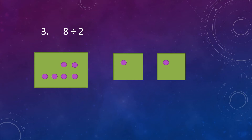Let's divide them. Again, put a dot and keep it in the first box, then take one and keep it in the second box. Now we are left with 4 dots to divide. Again, put a dot in each box — take one dot and put it in the first box, then take another dot and put it in the second box. Now we are left with 2 dots.